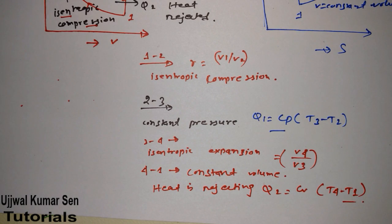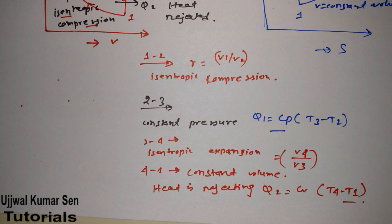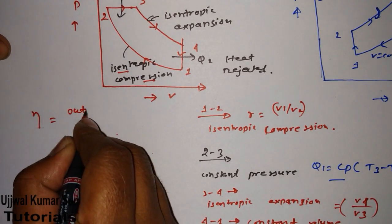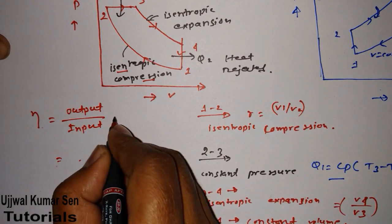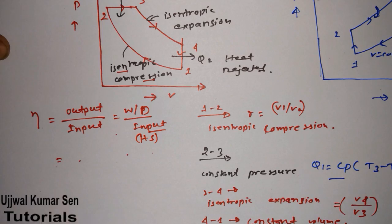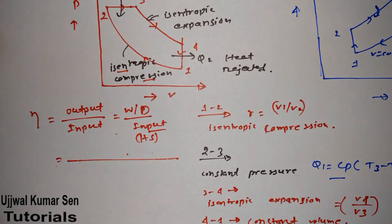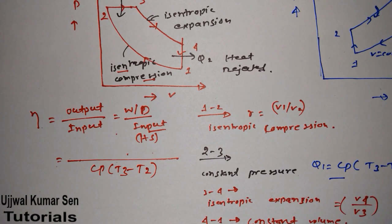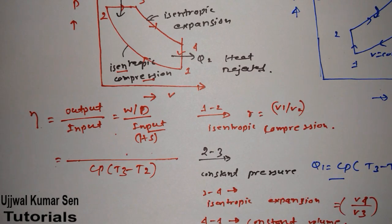So we've now covered all four processes: 1 to 2, 2 to 3, 3 to 4, and 4 to 1. We also have two key quantities — heat supplied Q1 = Cp(T3 - T2) and heat rejected Q2 = Cv(T4 - T1). From these, we can find the efficiency of the Diesel cycle. The general formula for efficiency is output divided by input, where output is work done and input is heat supplied.